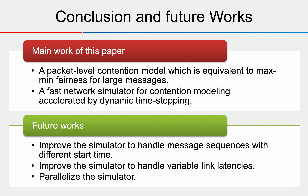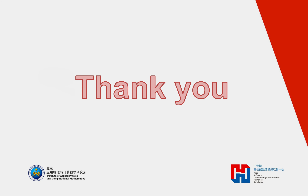To conclude, the main contributions of this paper are: a packet-level contention model equivalent to max-min fairness for large messages, and a fast network simulator for contention modeling accelerated by dynamic time stepping. The drawbacks include: we do not handle message sequences with different start times, and the simulator currently assumes every link shares the same latency. Future work will address these limitations and parallelize the simulator to evaluate its efficiency. Thank you for your attention.